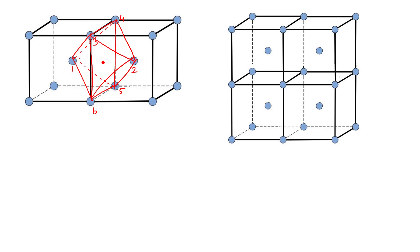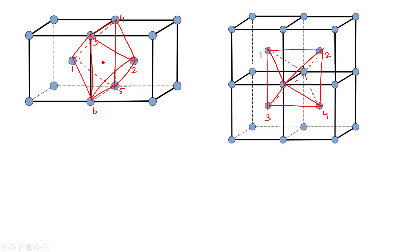An octahedron can also be drawn by considering four body-centered atoms 1, 2, 3, 4 and two other atoms adjacent to them. In this case, the octahedron void is located at the center of the common edge.